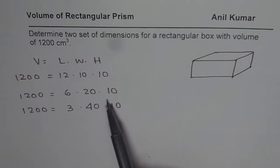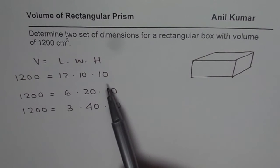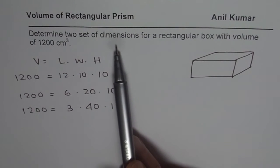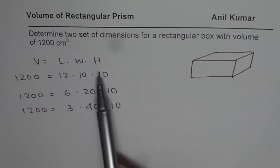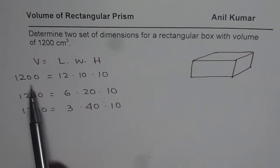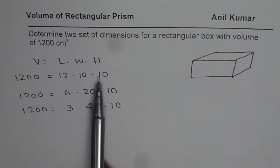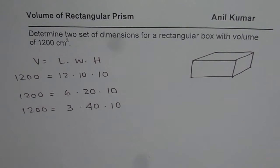So you can take any two of them to answer this question. But you got the idea. How to write different dimensions for the given volume? So if the volume is given, volume is product of length, width and height. So we have to get three numbers which when multiplied give us the required volume. That is how it should be done.